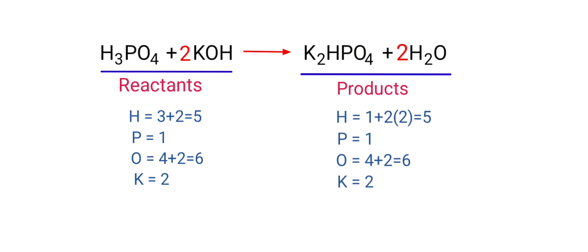The equation is now balanced. There are 5 hydrogen atoms, 1 phosphorus atom, 6 oxygen atoms, and 2 potassium atoms on both sides.